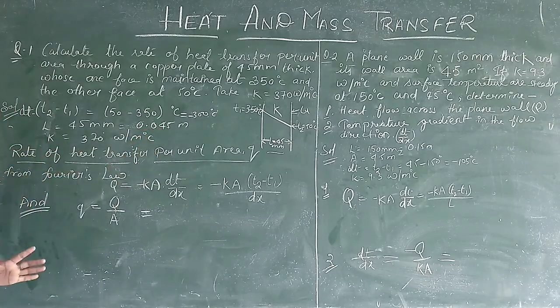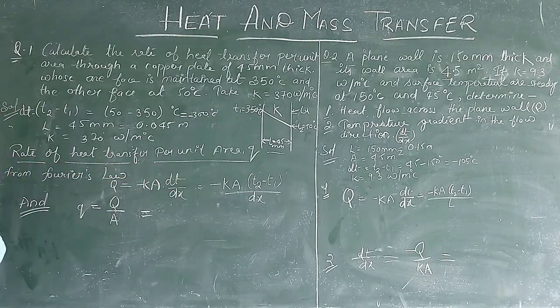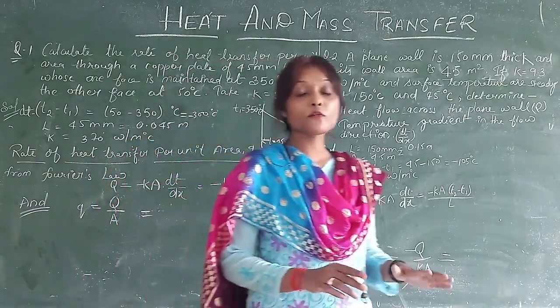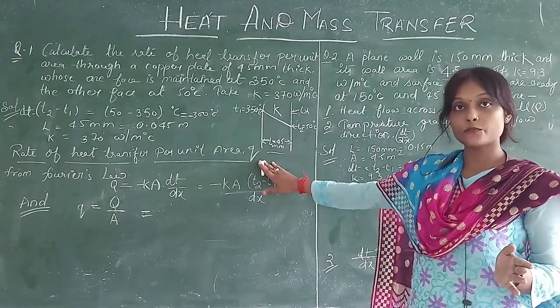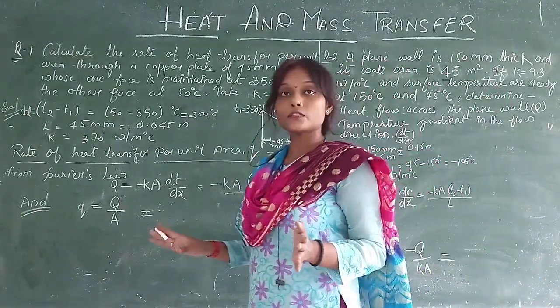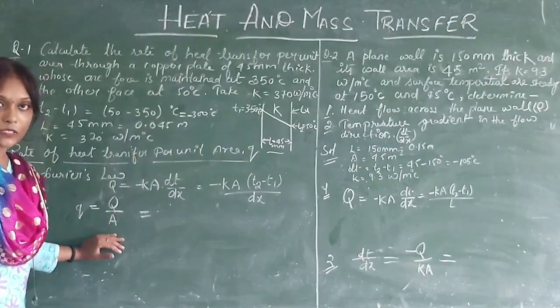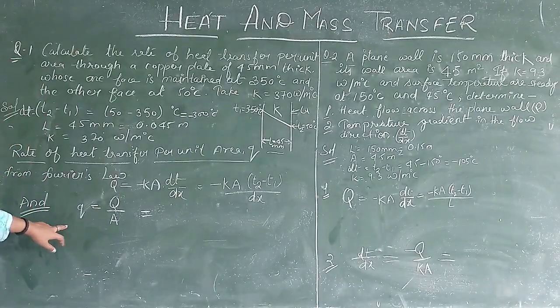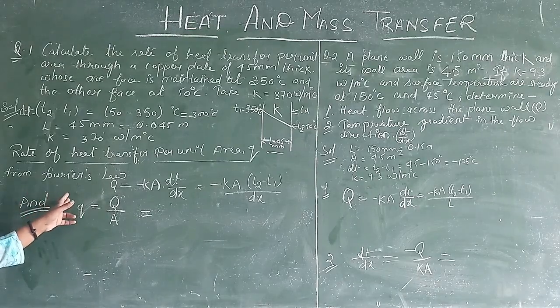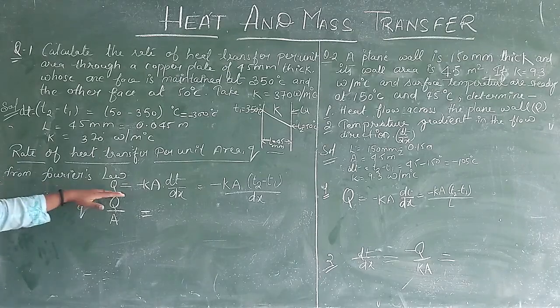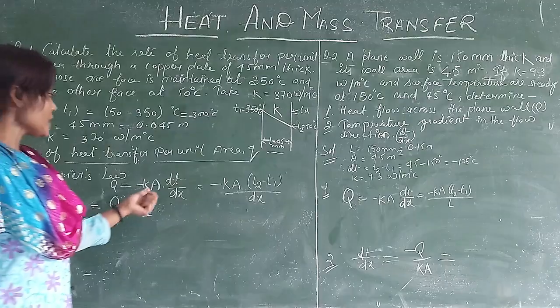K value is 370. Rate of heat transfer per unit area throughout the surface area, unit area, that means small q value. Now we are looking at Fourier's law of conduction. Q is equal to minus K A dT by dx.